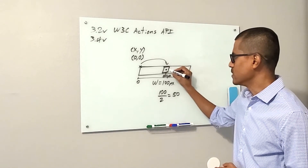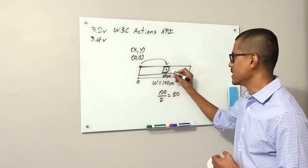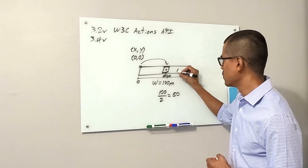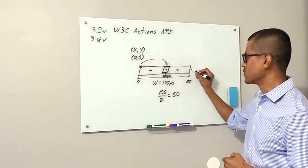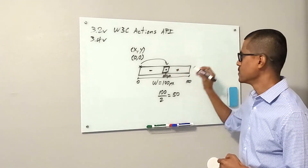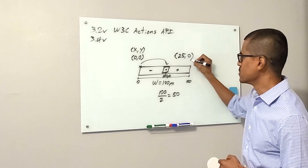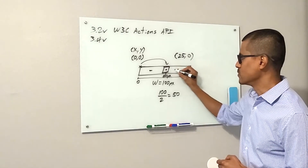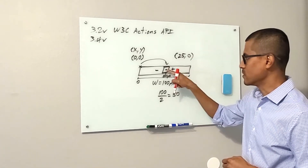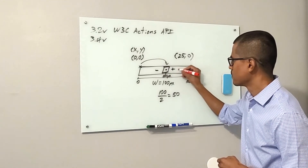Starting from the center point, we can move 50 pixels to the right or 50 pixels to the left. To move right, we pass a positive value to the X axis; to move left, we pass a negative value. We can move up to 50 pixels before going outside the element. For example, if we want to go 25 pixels from the center, we use coordinates 25, 0 — where 0 means no vertical movement. This means starting from the center, move 25 pixels to the right.